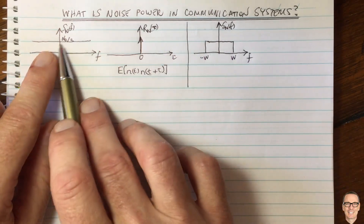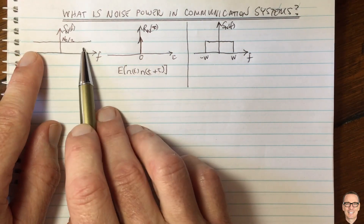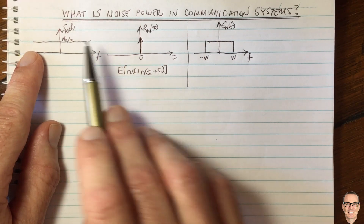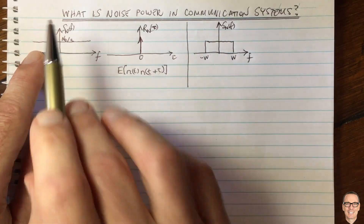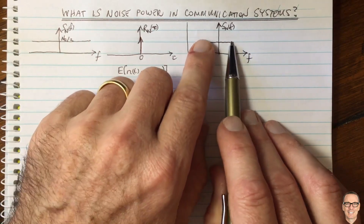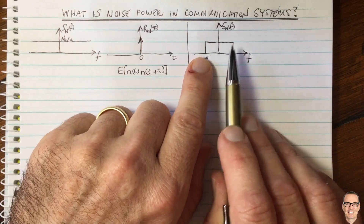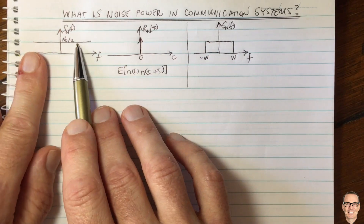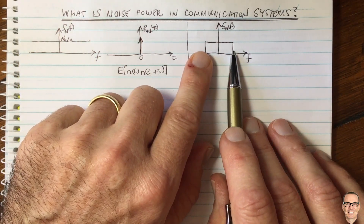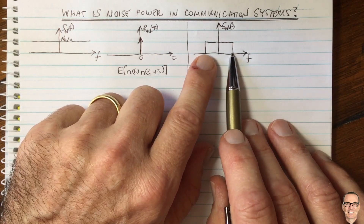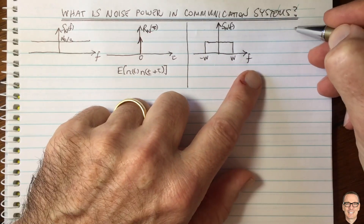How did we get the band-limited spectrum? We took the unconstrained noise and put it through a low-pass filter. The noise goes into a filter and comes out with this spectrum. That's an important concept to remember — this band-limited output arises by putting the unconstrained noise into a low-pass filter, which is what we do in the receiver of a communication system.